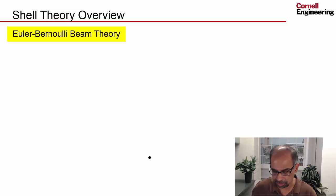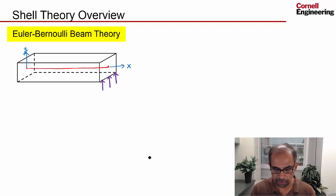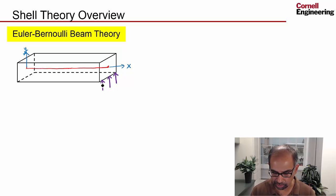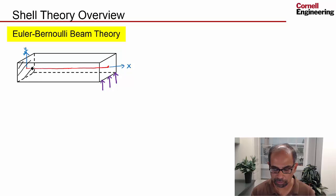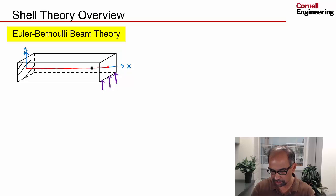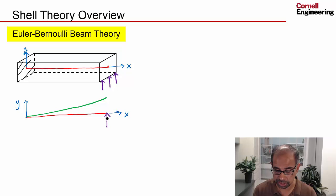First let's talk about Euler-Bernoulli beam theory. If you looked at a simple cantilever beam — with a load on one end and fixed at the other — to figure out how the beam is going to deform, you focus on the midline, which I've sketched in over here. The midline under the influence of this load, shown schematically, is going to deform something like that.